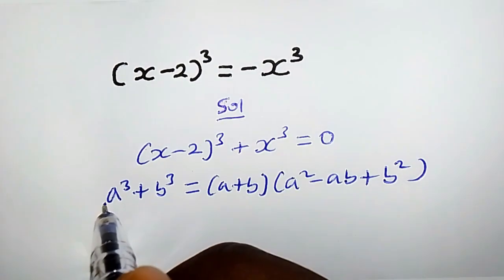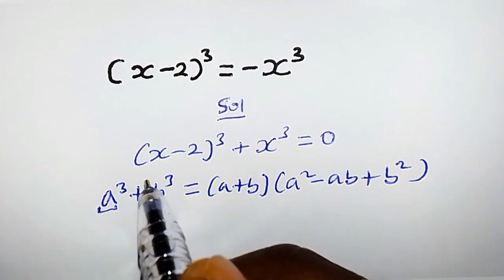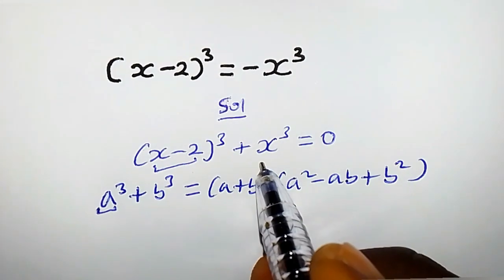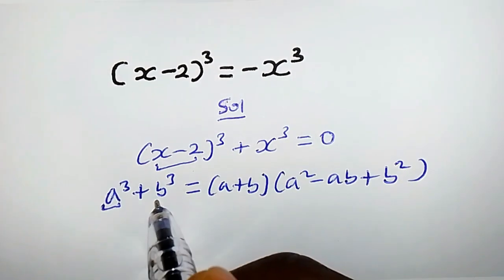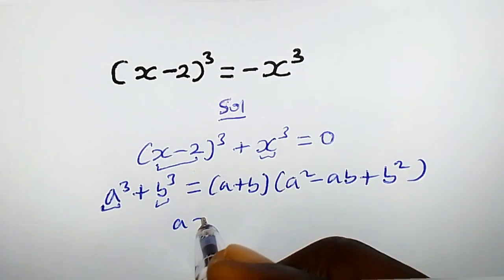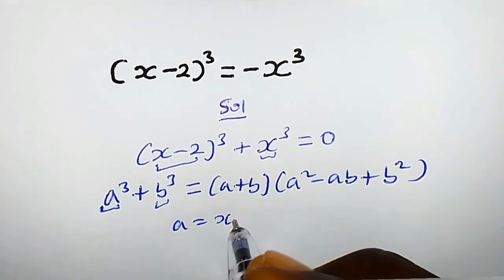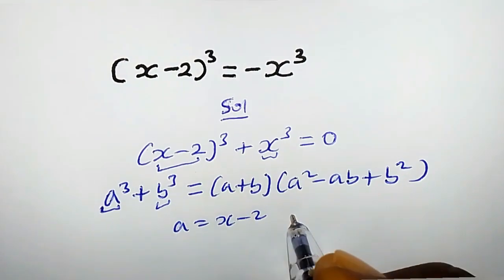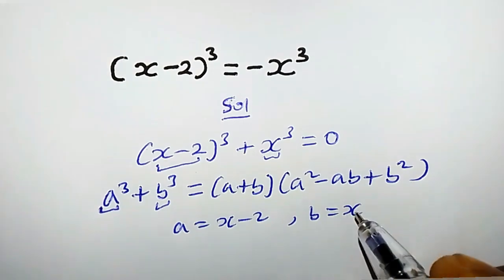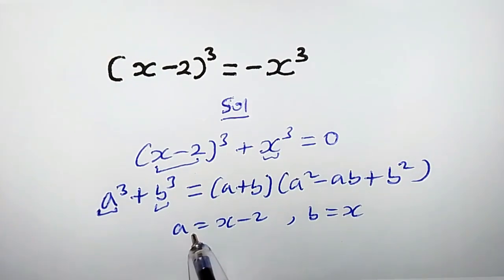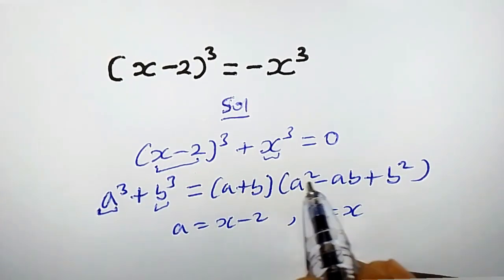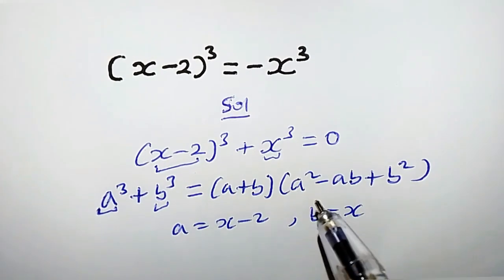By comparison, you will observe that our value of a is (x minus 2) and our value of b is simply x. So a equals x minus 2 and b equals x. So let's plug the values of a and b into the right hand side.